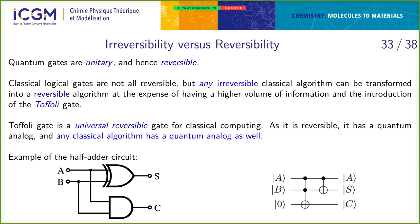This means that any classical algorithm can have a quantum analog. We can, with a quantum algorithm, emulate any classical algorithm. It doesn't mean that it's better — it just means that we can do it. The reverse is not true because of entanglement. Entangled states have no classical analog, so there are steps a quantum computer can do that classical computers cannot.